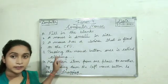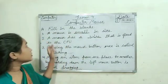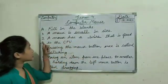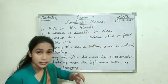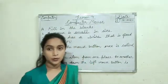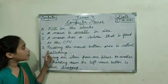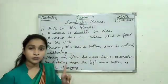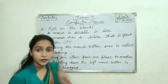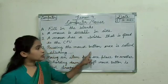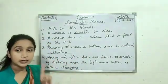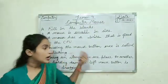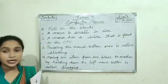Is it clear? So, what we had learnt today: a mouse is small in size. Second, a mouse has a wire that is fixed to the CPU. Next, pressing the mouse button — pressing the left mouse button once is called clicking. If it says 'mouse button,' it means the left mouse button. Last one: moving an item from one place to another by holding down the left mouse button is called dragging.